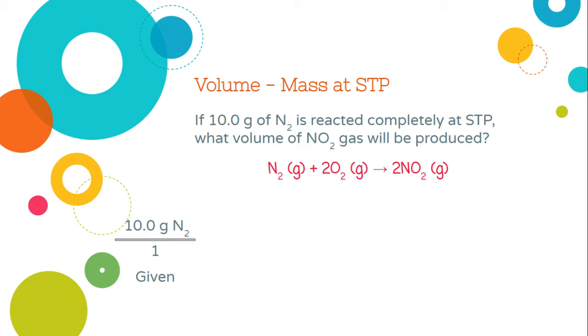So I'm going to take my 10 grams of nitrogen and put it over one. My next step, my next conversion factor, I need to get rid of those grams of nitrogen. So I'm going to put a molar mass conversion factor in here. Grams are bad, moles are good. So I'm going to cancel out grams by putting my grams on the bottom, left with moles.